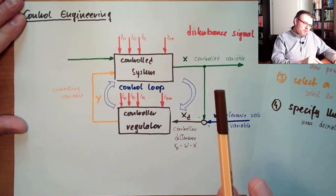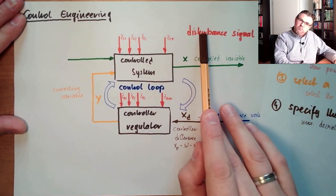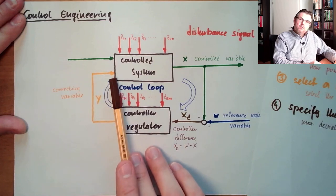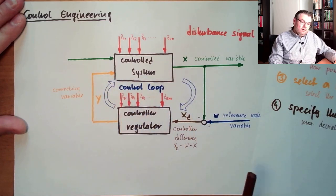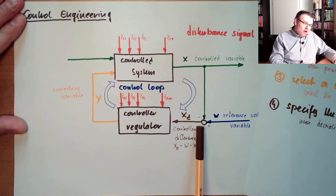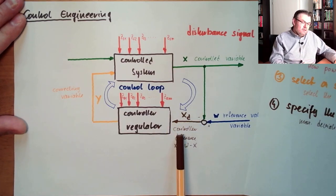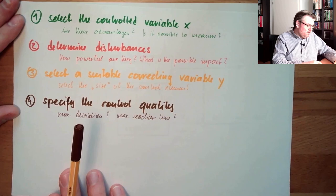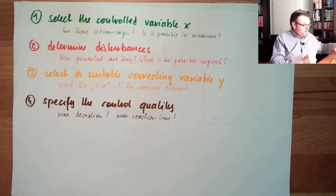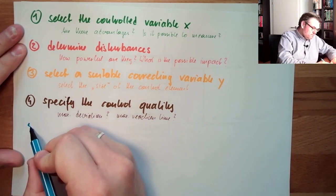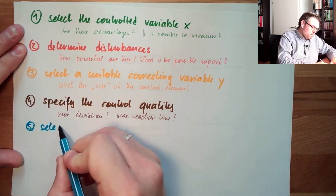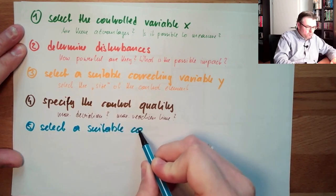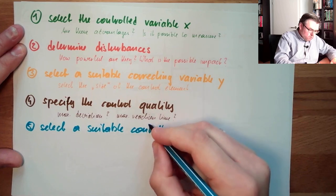Now we specify the control variable. We have identified possible disturbances. Based on the disturbances, we have selected the correcting variable and the size of the control element. Now that we know how good we need to be, we can finally select a suitable controller. Now we select the controller. Now we have five: select a suitable controller.